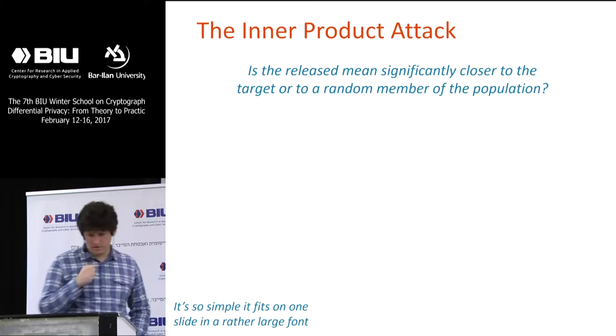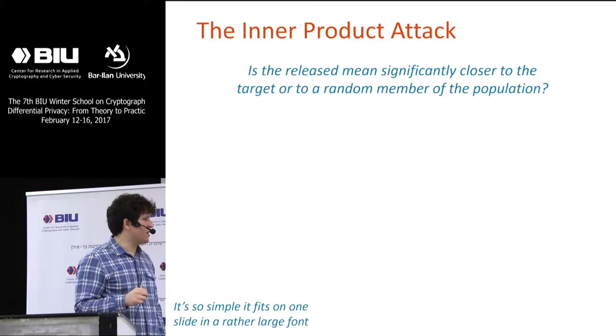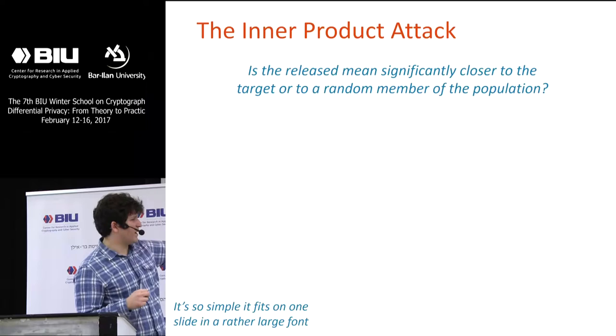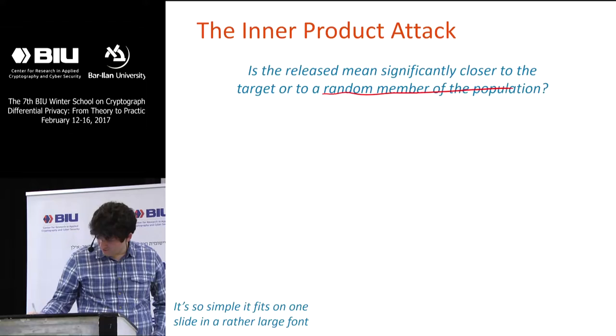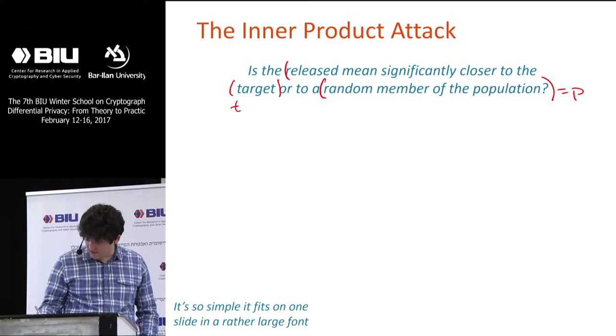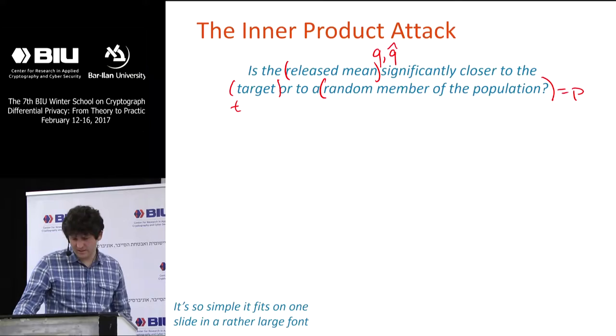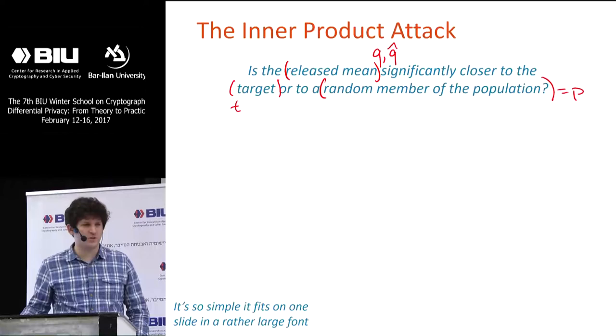The attack has a very simple form. You look at the released mean, the target, and a random member of the population — or just think of this as the population mean P. You have the population mean P, the target T, and the released mean Q or Q-hat, and you ask: does the target look more like the mean of the dataset or the mean of the population?